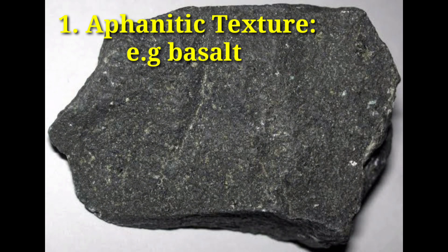1. Aphanitic texture. Aphanitic rocks have mineral grains that are mostly too small to be seen with the naked eye or a hand lens, like this rhyolite. Basalt is another igneous rock with the aphanitic texture.